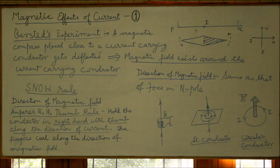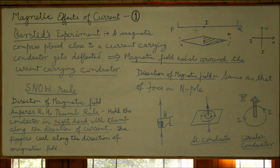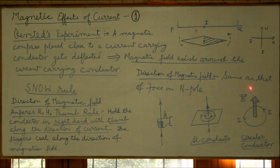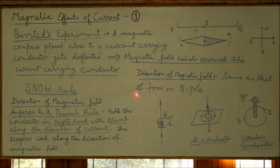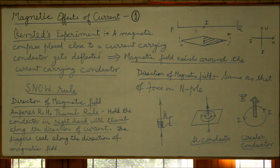Now, what is the direction of the magnetic field? By convention, the direction of magnetic field is taken to be the same direction in which a north pole experiences a force. Here, the north pole experiences a force towards the west, so this also indicates the direction of the magnetic field at this particular point.